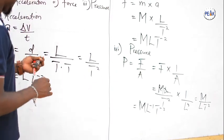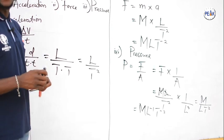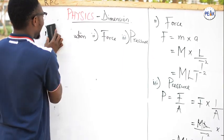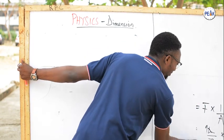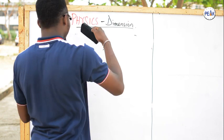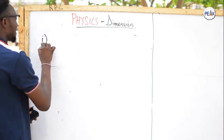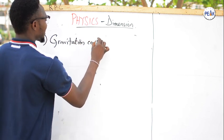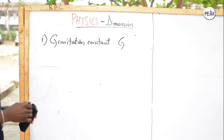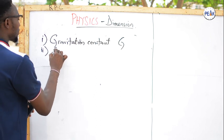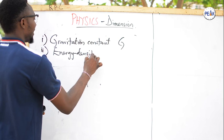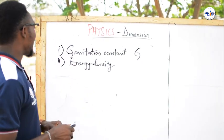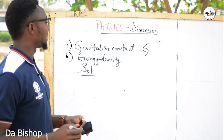Let me also give the dimensions of two quantities that usually confuse physics students. The first is the dimension of gravitational constant G, and the second is the dimension of energy density. After solving these two, I'll give you some drill exercises to carry out.